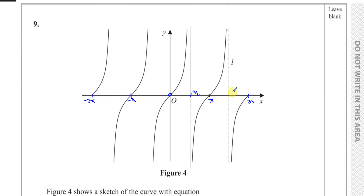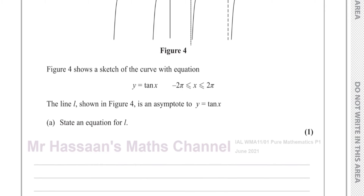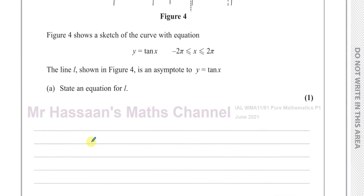The asymptote repeats again every pi radians, so there's going to be another one: pi over 2 plus pi, which is pi over 2 plus 2 pi over 2, which equals 3 pi over 2. So the equation of line L is x equals 3 pi over 2. That's the equation for line L — the second asymptote in the positive direction.